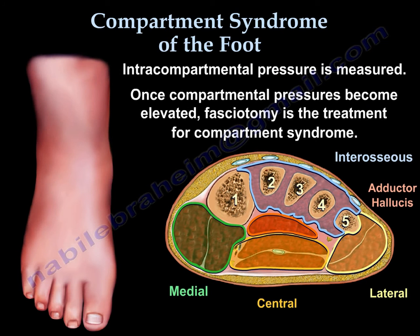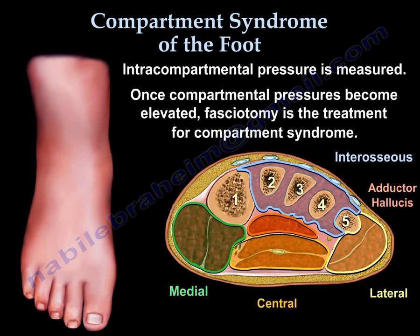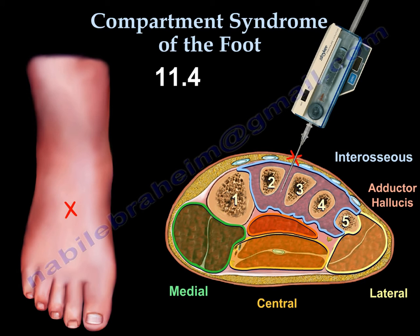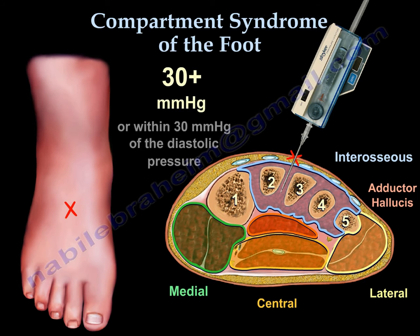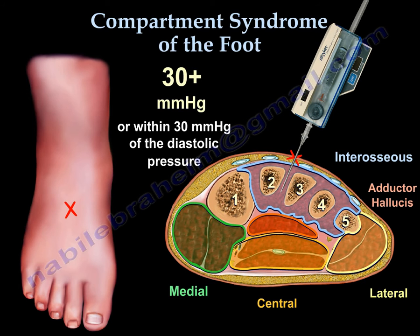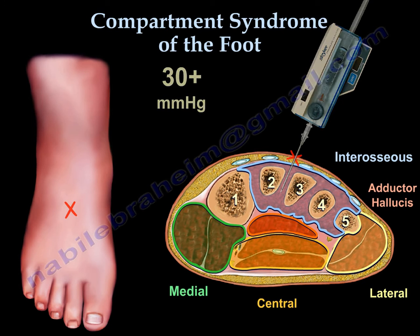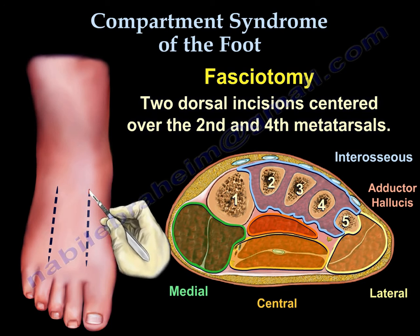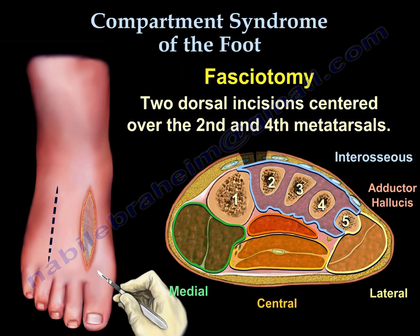Intercompartmental pressure is usually measured. Once the compartment pressure becomes elevated, fasciotomy is usually the treatment of choice. If the pressure is 30 mmHg or within 30 mmHg of the diastolic pressure, then we have compartment syndrome and we perform fasciotomy with two dorsal incisions centered over the second and fourth metatarsals.